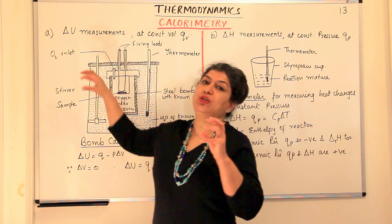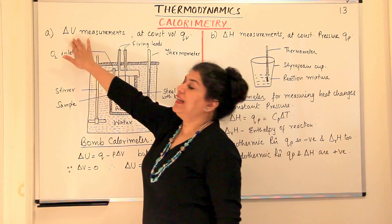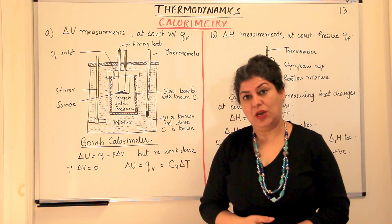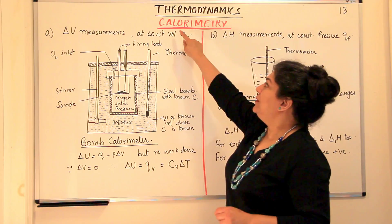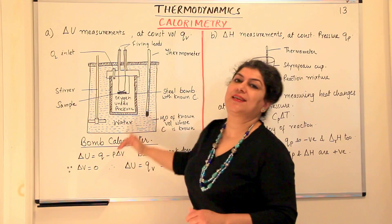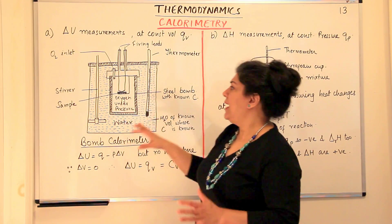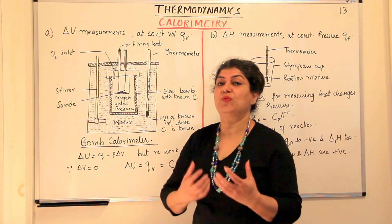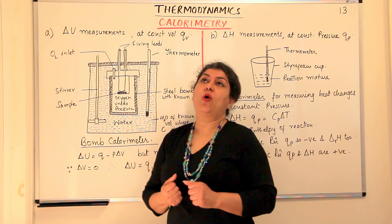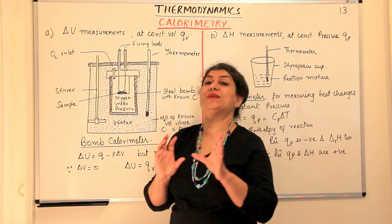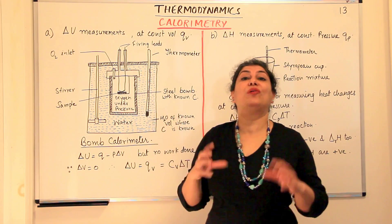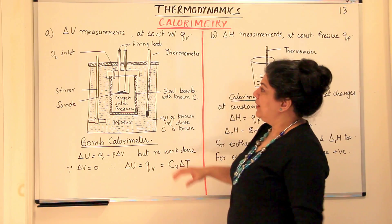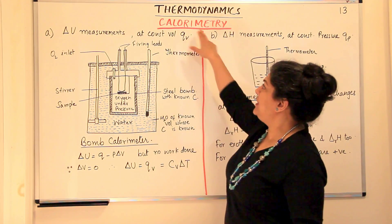We can calculate delta U, the change in internal energy, by calculating the change in heat when the volume is constant. The instrument used for calorimetry is known as a calorimeter — a vessel in which the reaction takes place and which allows you to calculate the transfer of heat by measuring the temperature difference, since you know the heat capacity of that container. The delta U measurements are done at constant volume, and the heat exchanged is QV.